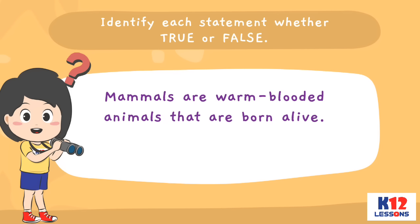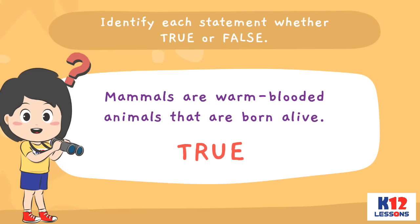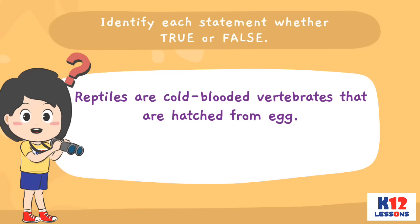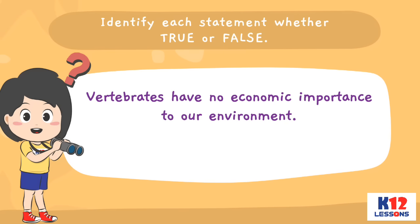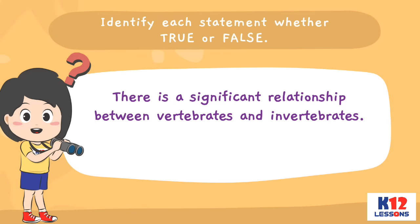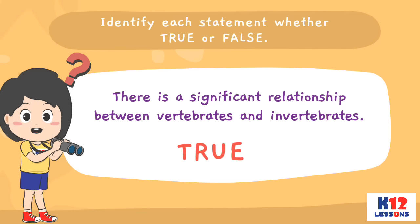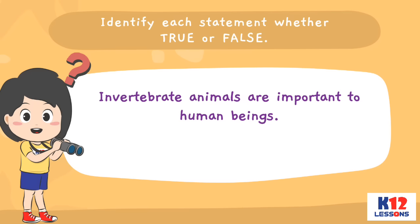Identify each statement whether true or false. Mammals are warm-blooded animals that are born alive. Reptiles are cold-blooded vertebrates that are hatched from egg. Vertebrates have no economic importance to our environment. There is a significant relationship between vertebrates and invertebrates. Invertebrate animals are important to human beings.